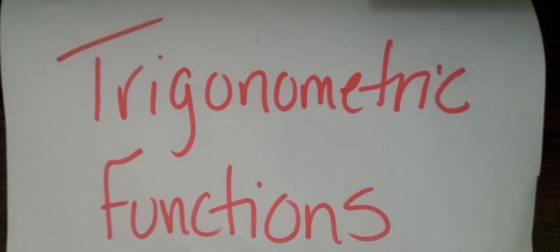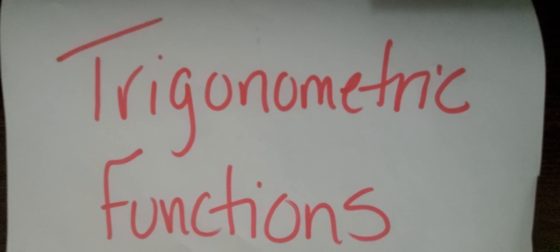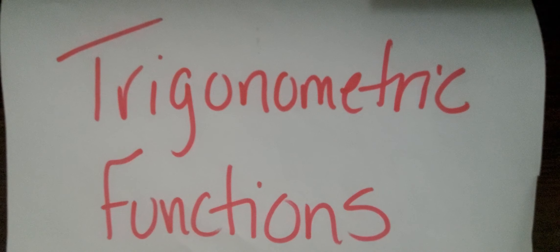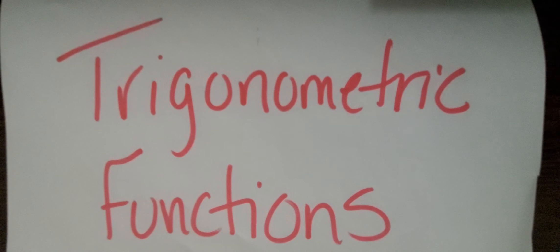Today's lesson is going to be on trigonometric functions and those special right triangles, which are the 45-45-90 degree triangle and the 30-60-90 degree triangle. At the end of today's lesson, you should be able to find the six trigonometric ratios for a given triangle and give the exact ratio for a given function.